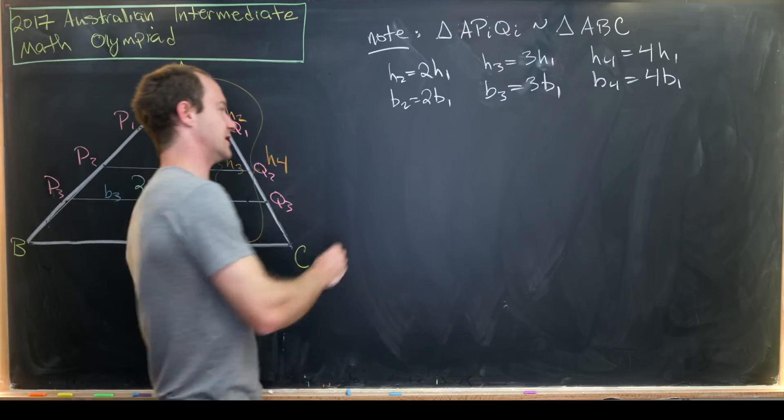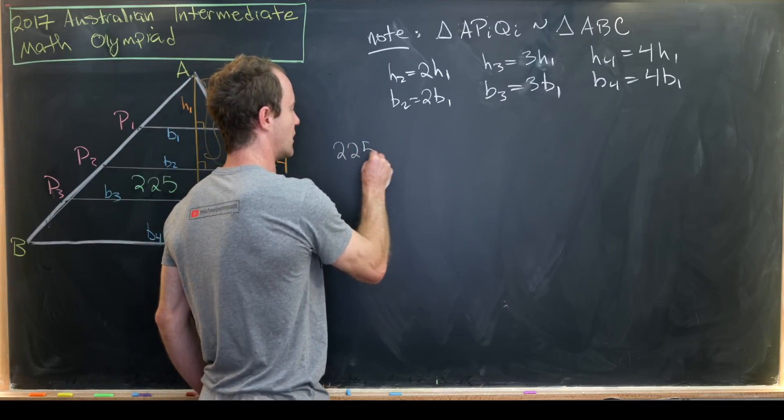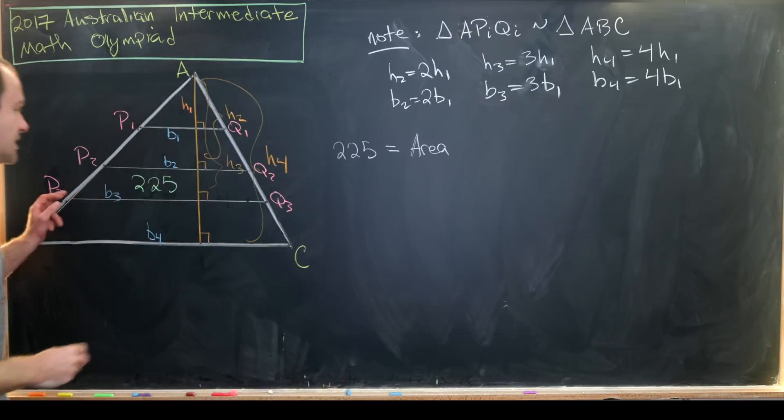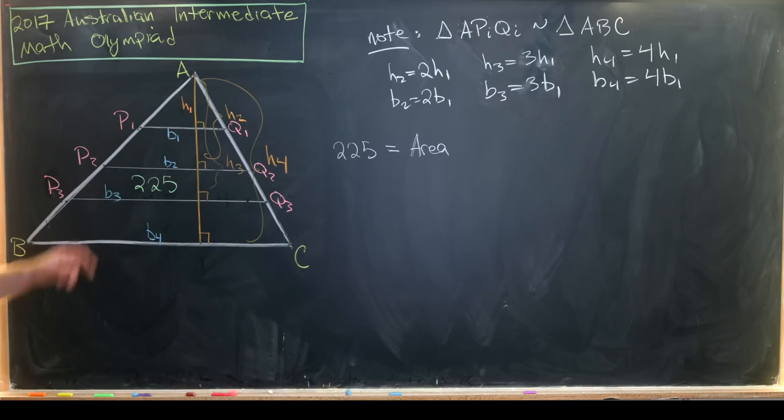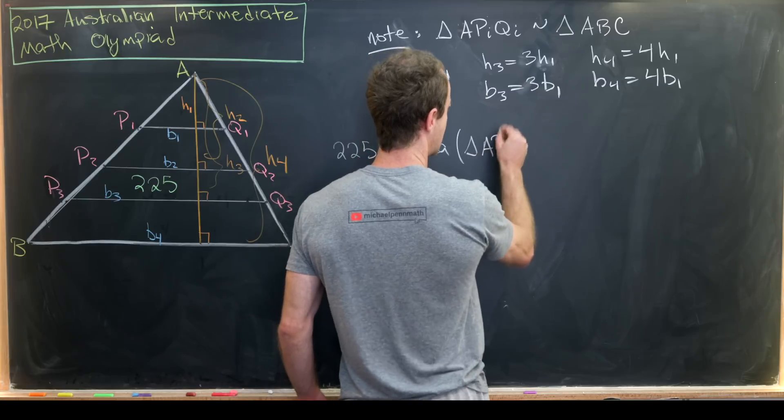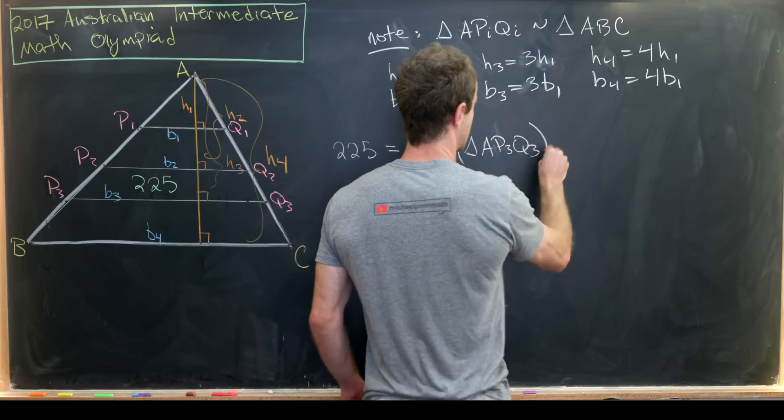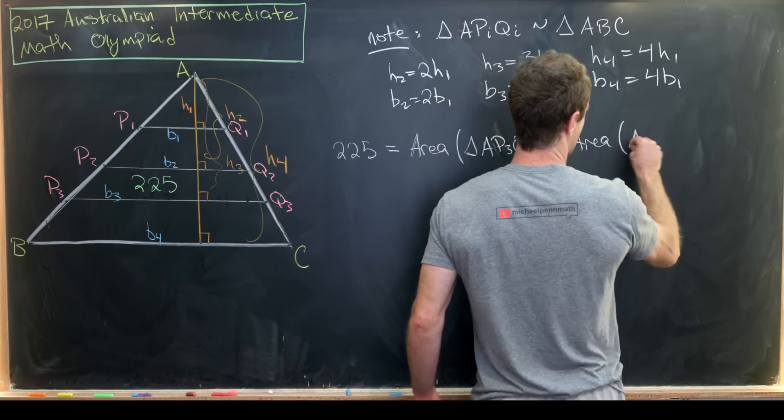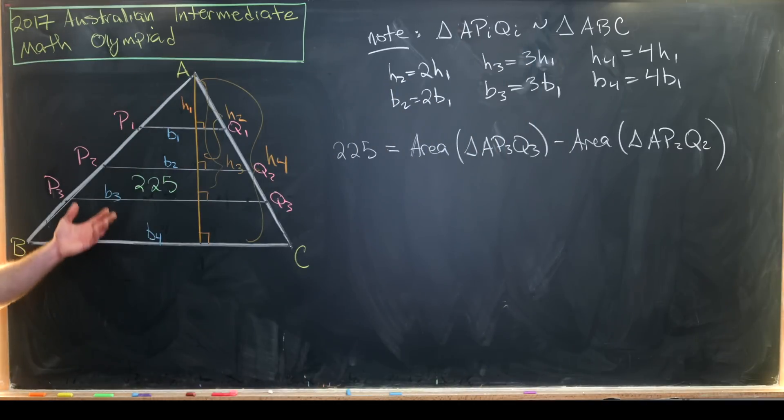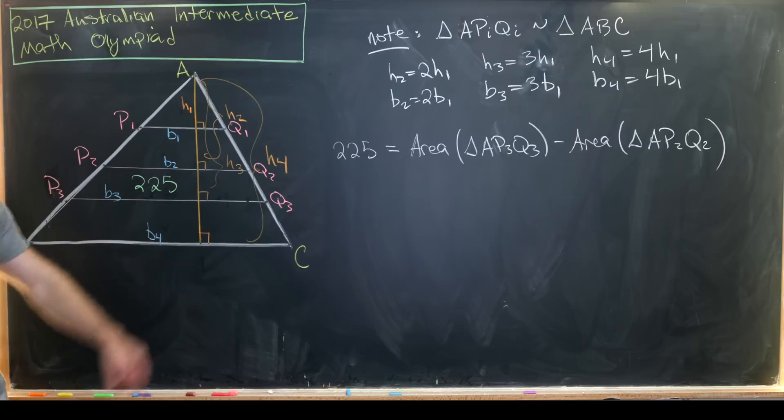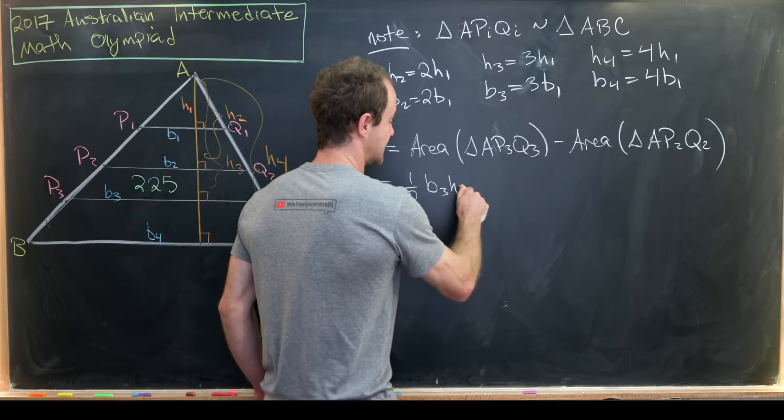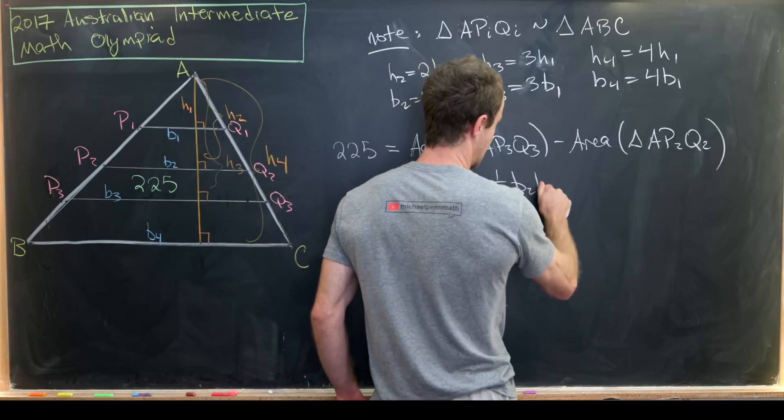So now let's see what we're given. We're given that 225 is equal to the area of which triangle? Well, it's the third largest triangle minus the second largest triangle. So that's going to be the area of triangle AP3Q3 minus the area of triangle AP2Q2. Because this 225 is not the area of a triangle, it's the area of this little slice right here. But now that's going to be equal to 1 half B3H3 minus 1 half B2H2.